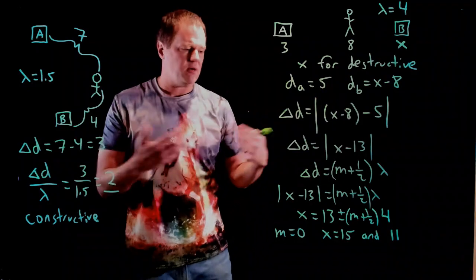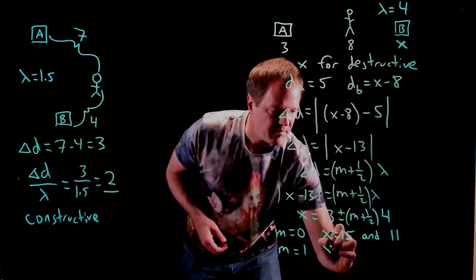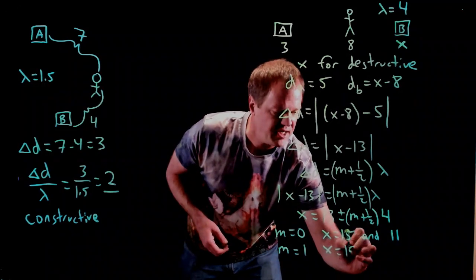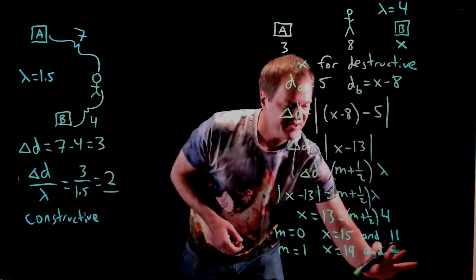Of course, you can throw in m equals one. Let's go ahead and do that, and then we'll call it good. If I throw in m equals one, I'm going to get x equals 19. And I'm also going to get seven.